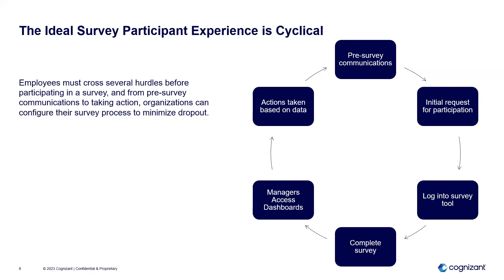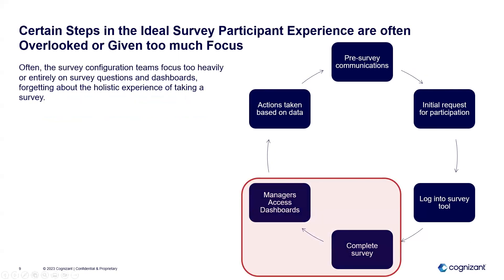Employees follow that link, access the survey tool, provide their data, and then managers — and sometimes employees — access dashboards with relevant findings. Teams take action on these findings, everyone sees those actions being taken, and an improved employee experience results. A continuous cycle of improvement is established with pre-communications starting again, employees fully on board with the goals. However, employees must cross several hurdles before actually providing data, and there is dropout during this experience. Organizations often get fixated on just one or two steps — typically completing the survey and dashboards — while overlooking the other four steps.